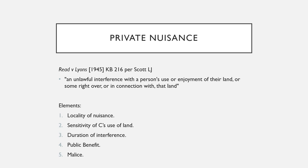And this has five elements: there's locality of nuisance, the sensitivity of the claimant's use of the land, the duration of the interference, public benefit, and lastly malice.